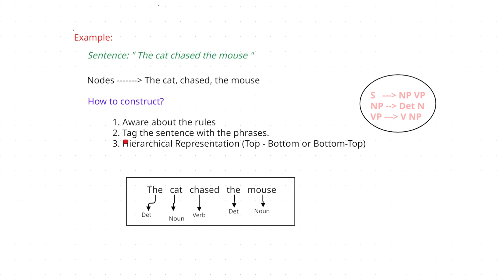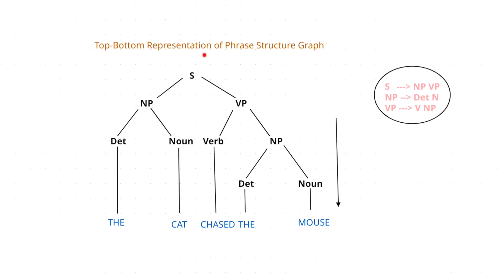The third step is to represent the structure in a hierarchical manner. While representing that particular graph, it may be from top to bottom or bottom to top. If they ask about this topic in your exam, you can construct both top to bottom and bottom to top. So let's discuss the top-to-bottom approach. Using these rules, we are going to construct this particular graph. Whenever you take the sentence, it should be divided into noun phrase and verb phrase, as you can see here.